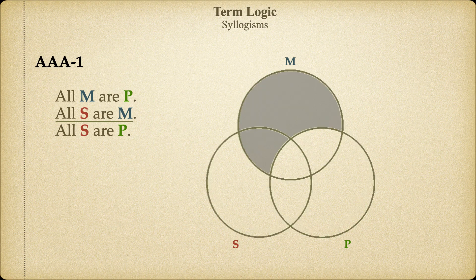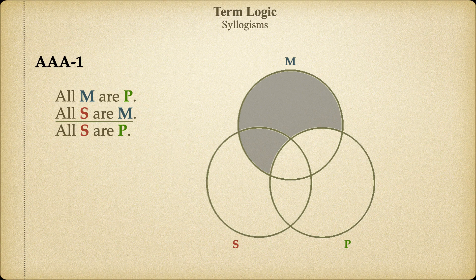We start by adding the information from the major premise, which tells us all M are P. We've shaded out regions 1 and 2, because the major premise tells us that every single thing that is an M is also a member of the class of P, so there can be no M's outside the region of P. Now that we've eliminated all the M's that aren't P's, the remaining M's are also members of the P class.